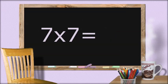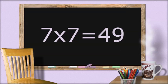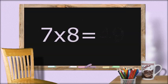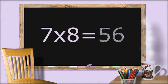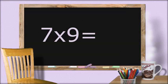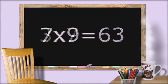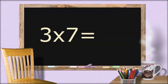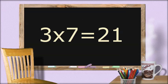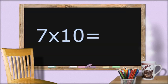7 times 7 equals 49. 7 times 8 equals 56. 7 times 9 equals 63. 3 times 7 equals 21. 7 times 10 equals 70.